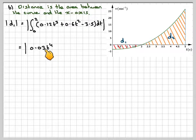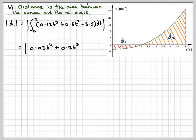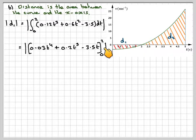So that would be t to the 4 divided by 0.12 divided by 4 gives me 0.03. And then we've got t cubed, so 0.6 divided by 3 gives me 0.2, and then minus 3.5t, and that's from 0 to 2.